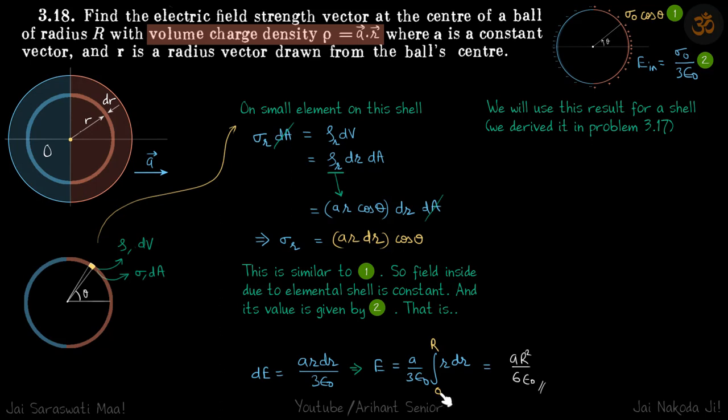So limits will be from 0 to r and we will get our total field a r square by 6 epsilon. So needless to say direction should be towards left. So again do this problem if you did not understand this and then you will probably get it.